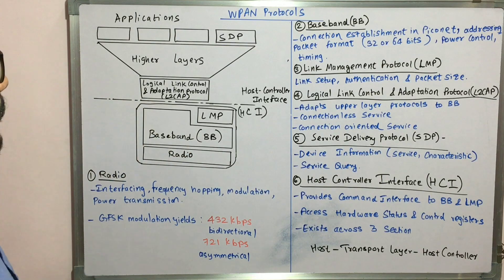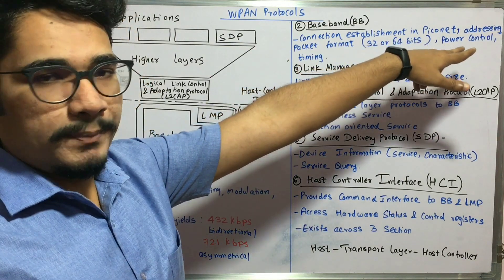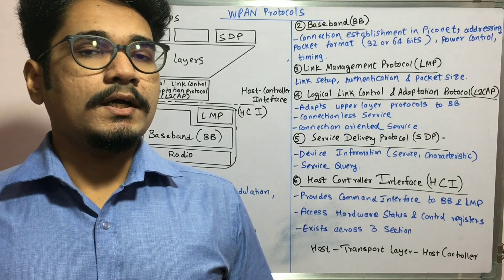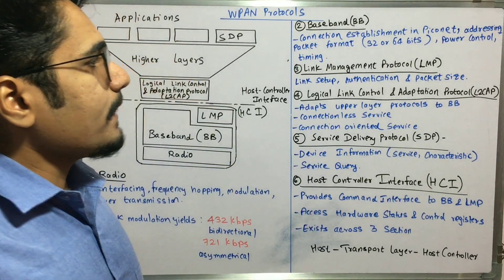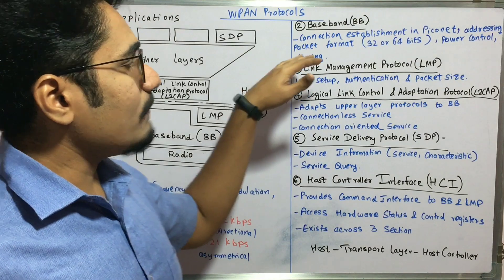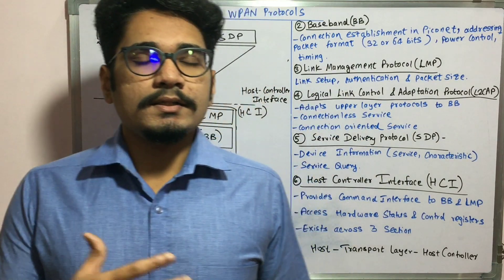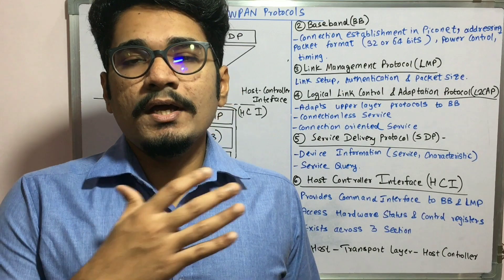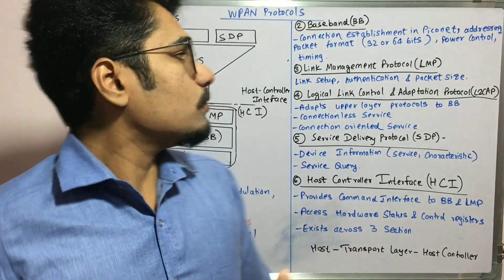Next we move to the layer above, which is the baseband, also known as BB. It handles connection establishment and is done in a Piconet. Piconet is a topology in which WPAN functions — there are basically Piconet and Scatternet, in which different network nodes are arranged in a particular fashion. The baseband also handles addressing, such as 32-bit and 64-bit addressing modes, packet format, power control, and timing. Since it uses a master-slave architecture, different time slots are arranged — for example, using TDMA — and all of this comes under the baseband.